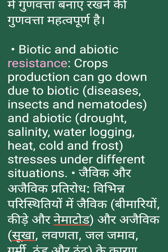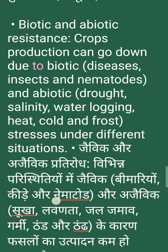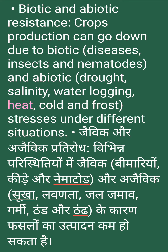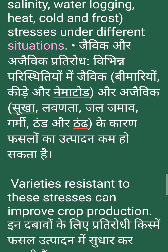Biotic and abiotic resistance: crop production can go down due to biotic diseases, insects and nematodes, and abiotic stresses such as drought, salinity, water logging, heat, cold and frost under different situations.